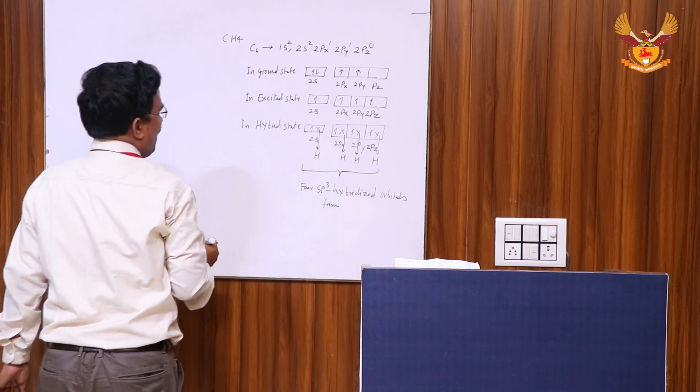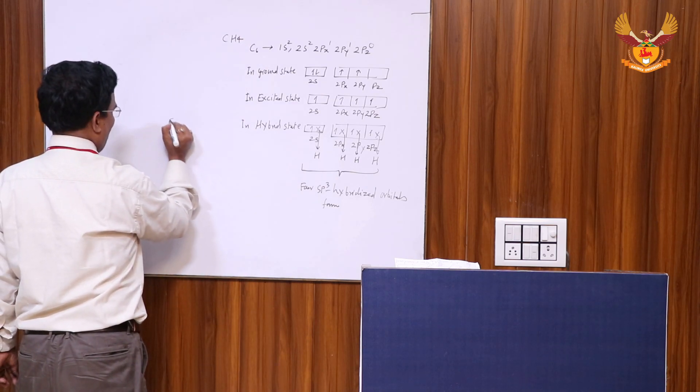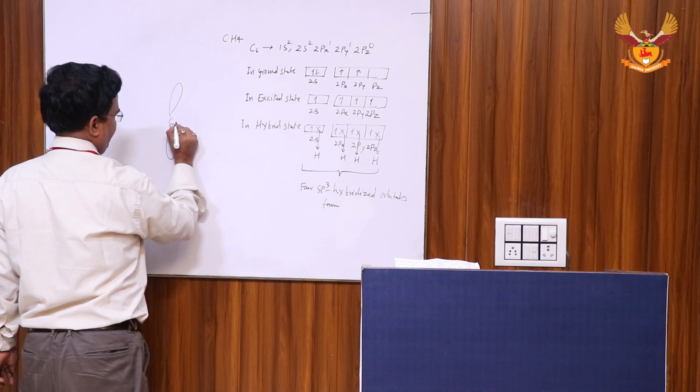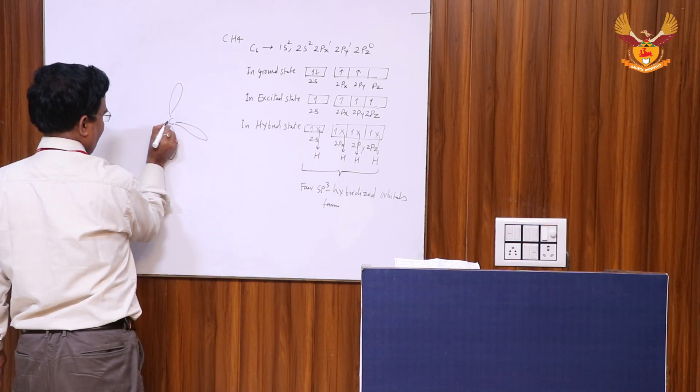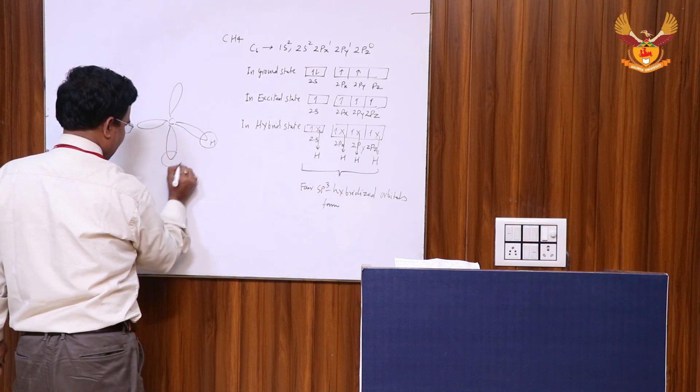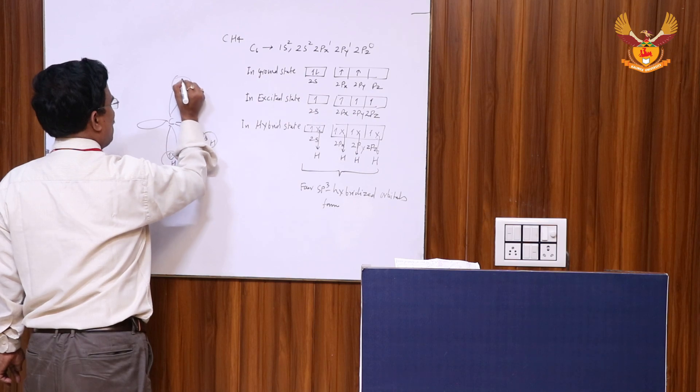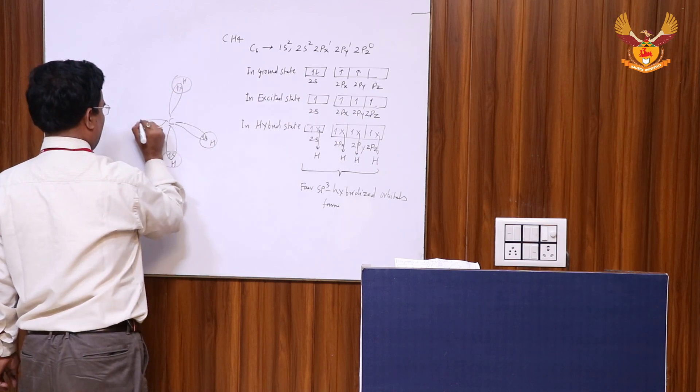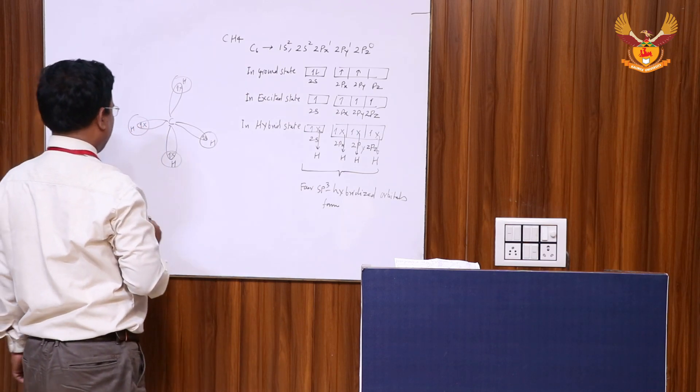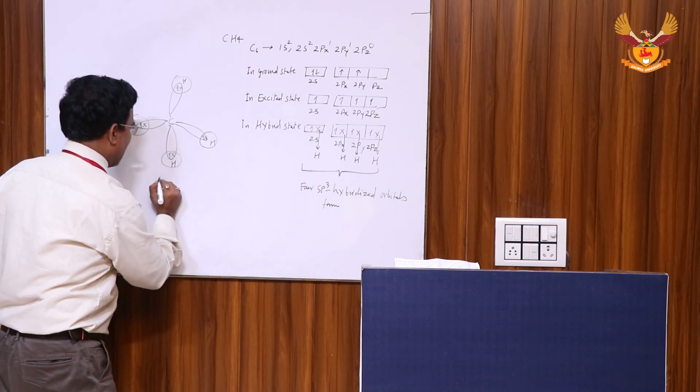If we discuss here the lobes of methane molecule: one hydrogen atom sharing, second hydrogen atom sharing, and third hydrogen atom sharing with the electrons, resulting in the formation of sp3 hybridization.